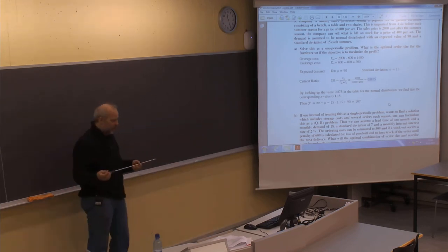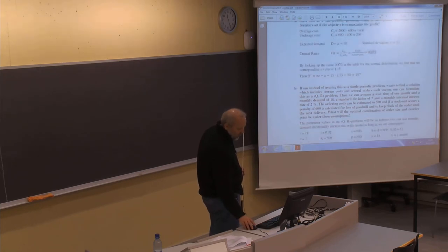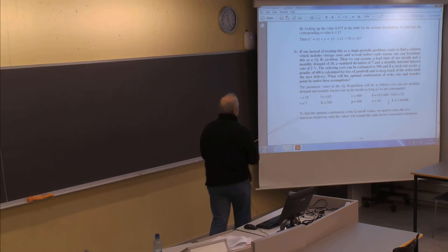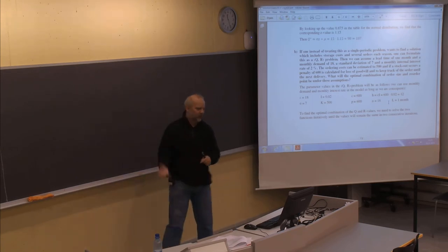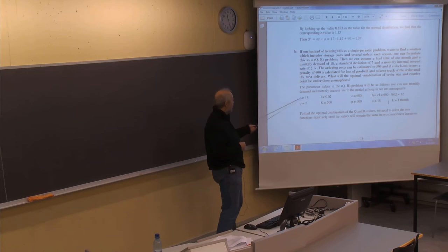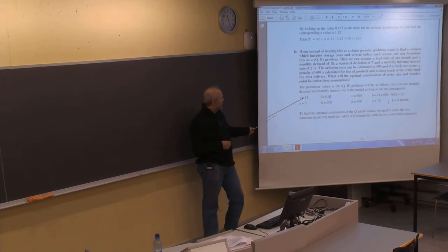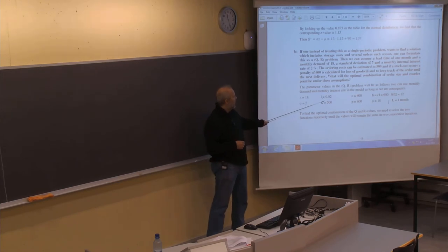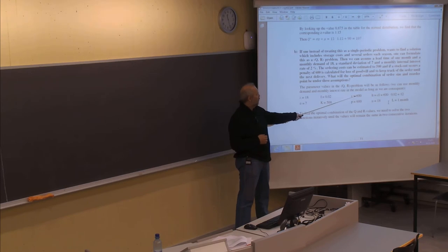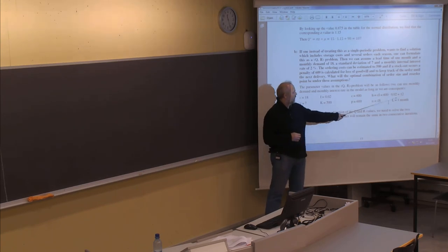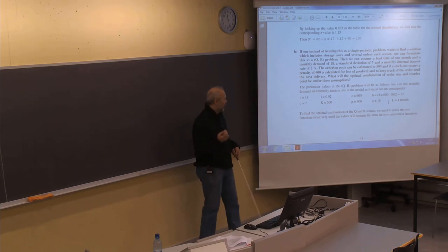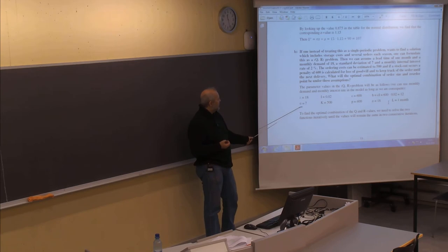That's the answer for problem A. For problem B, we read the information carefully. We have a monthly demand of 18, an interest rate per month of 2%, a cost per unit C of 600, and a holding cost of 12 per month (unit cost multiplied by interest rate — so storing one item for one month costs 12 kroner). The standard deviation per month is 7, the ordering cost K is 500.